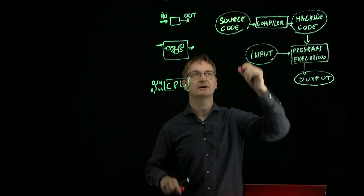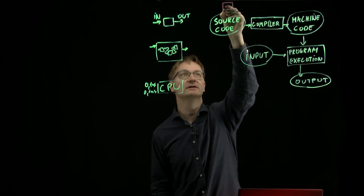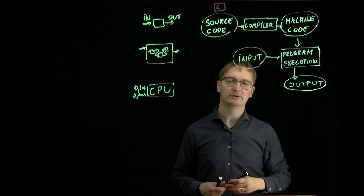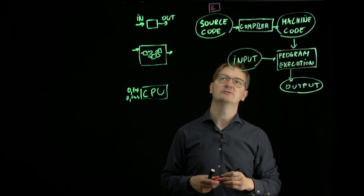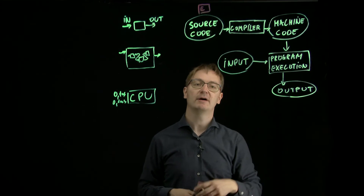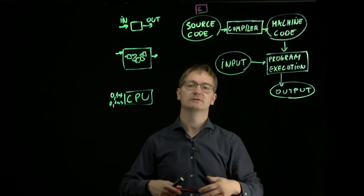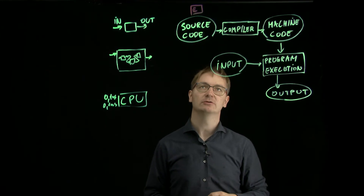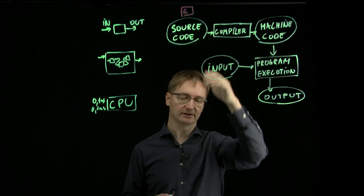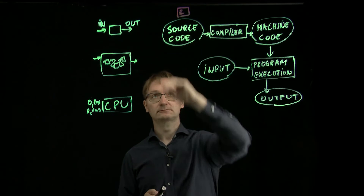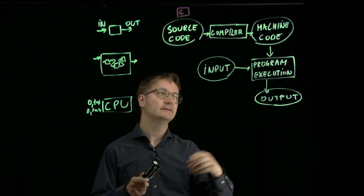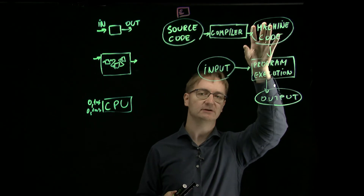So we have source code — something you write, basically a file. You write some code, put it into a file, and send it to the compiler. Note that Python is not a compiled language, so this doesn't apply to Python, but C is an example. You write your code, send it to the compiler, and get machine code out.